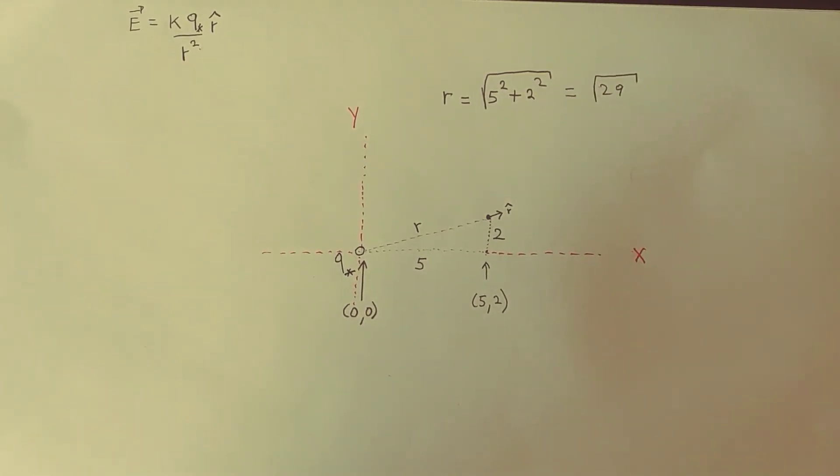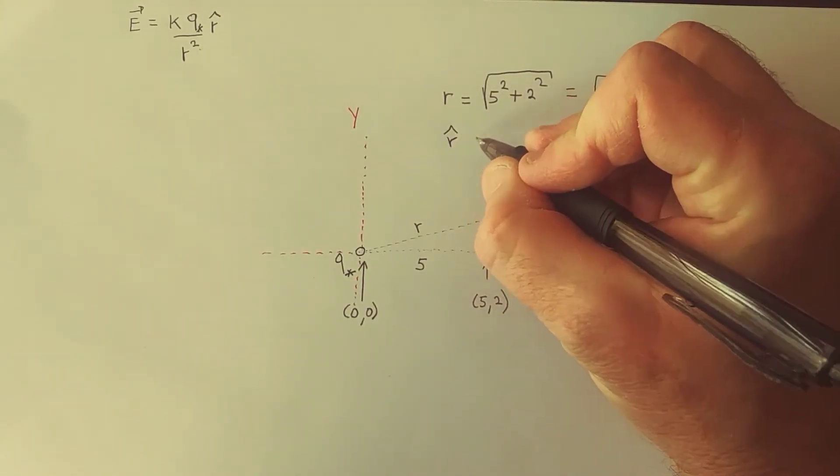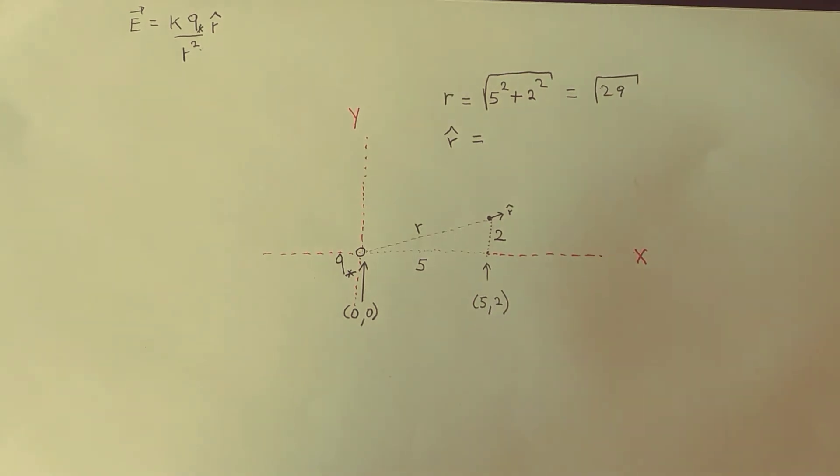So that's clearly not a unit vector. Let's construct a unit vector that captures distance but doesn't have any magnitude. In other words its magnitude is 1. Well that's straightforward.